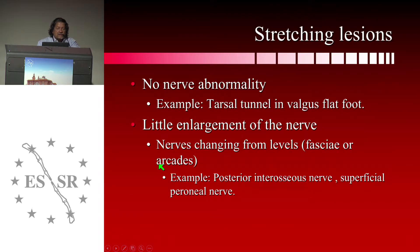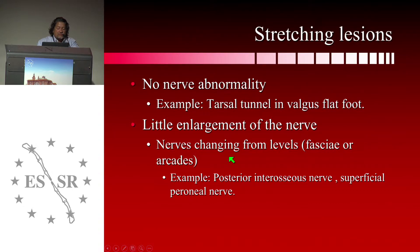Stretching lesions are another type you can sometimes see with ultrasound. Again, there is either no nerve abnormality — for example, in the tarsal tunnel in valgus flatfoot, you cannot see very much in the tibial nerve — and sometimes you can see a small enlargement of the nerve. This occurs where nerves change levels or pass from deep to superficial parts of the limb, or when nerves pass through arcades, like the posterior interosseous nerve at the elbow.